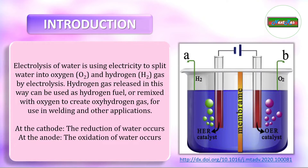Usually water. The two electrodes are known as cathode and anode. When an electric current is applied to the electrolyser, several reactions occur at each electrode. At the cathode, reduction of water takes place, whereas at the anode, oxidation of water takes place.